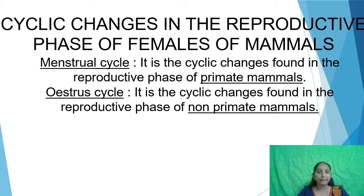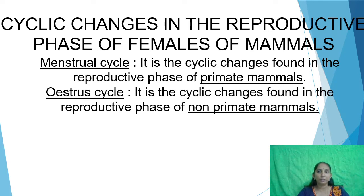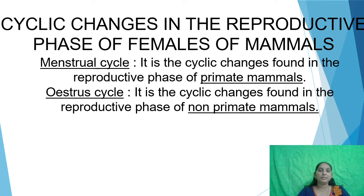In humans, the menstrual cycle is 28 days — one complete cyclic change. Similar cyclic changes are also found in the reproductive phase of non-primate mammals.